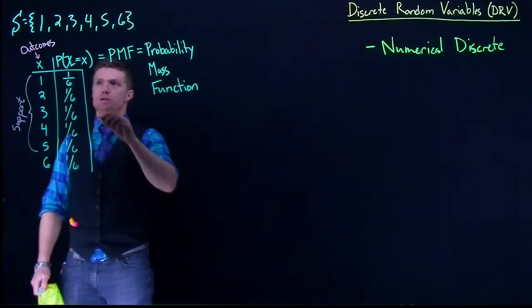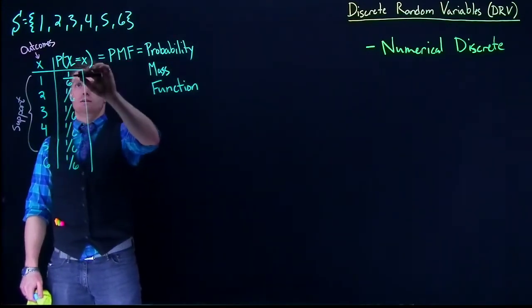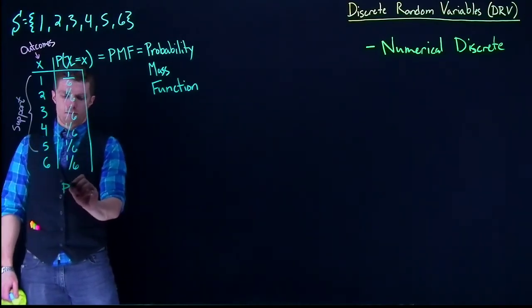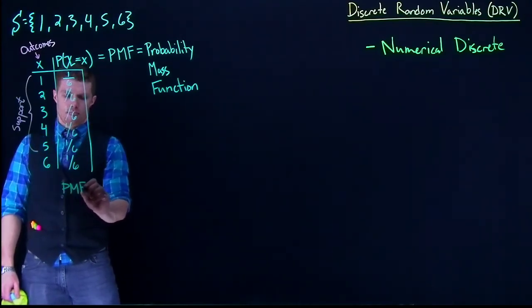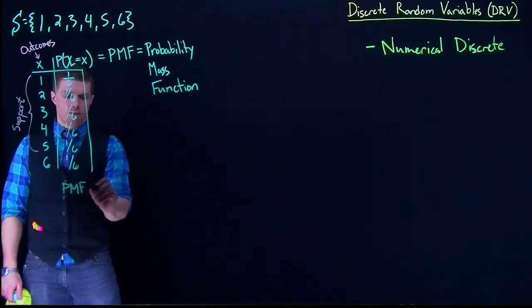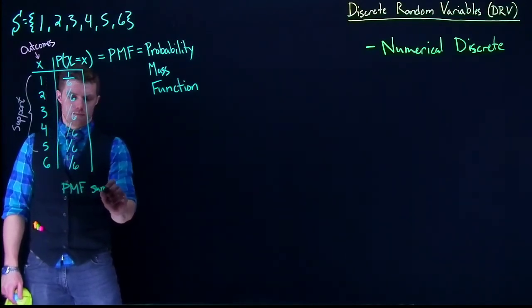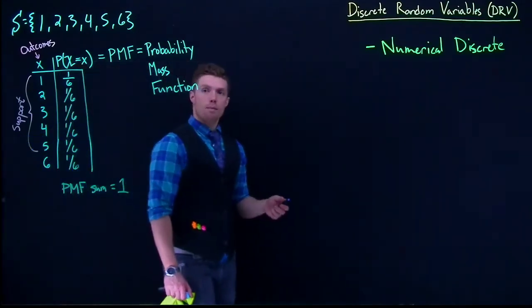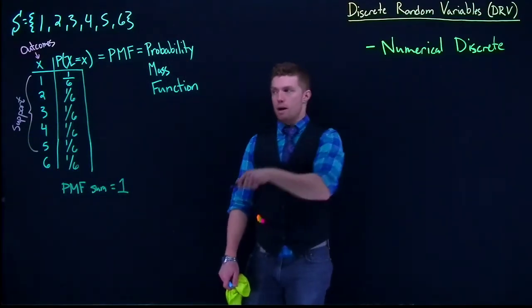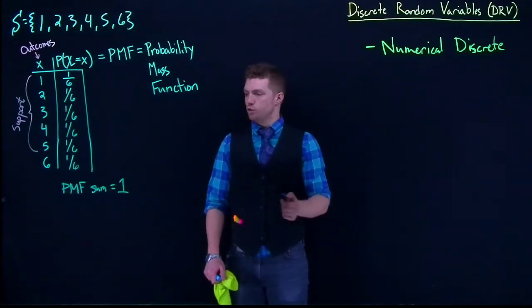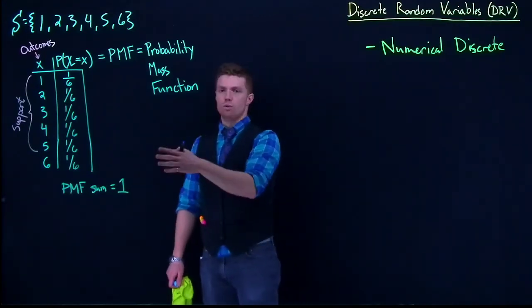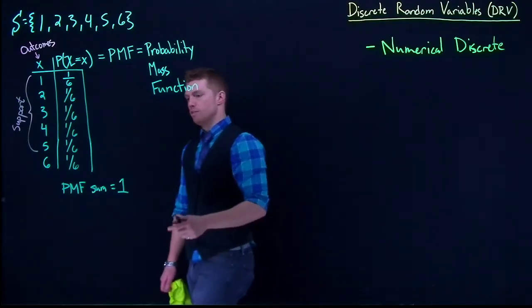What must be true is that this column right here, the PMF, the sum of it equals 1. If we sum up the probabilities of all possible outcomes, they equal to 1. That's just one of the rules of our PMF, that the PMF sum must equal 1.